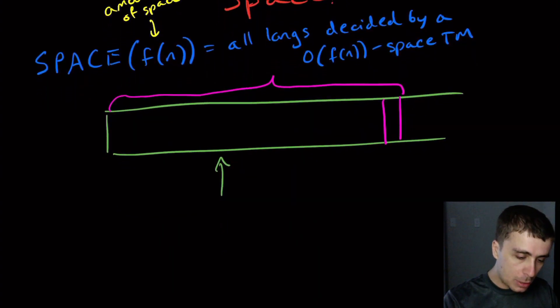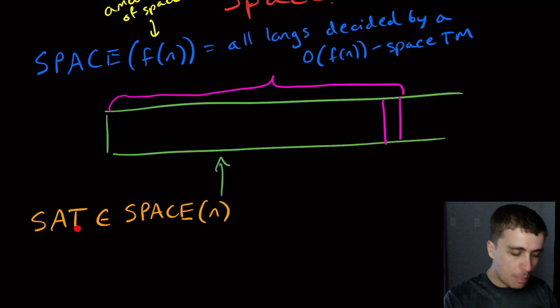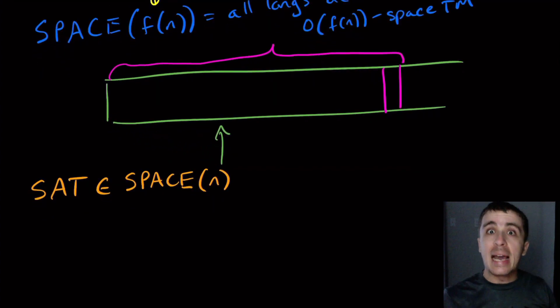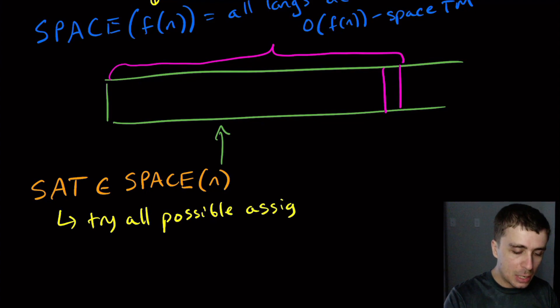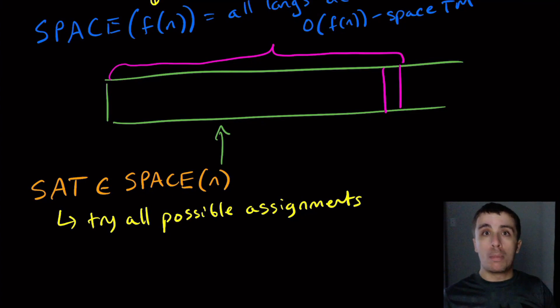So I want to show some examples. We've talked about SAT before. So I claim that SAT is in space of n. If you don't remember, SAT is the problem of you're given a Boolean formula and you want to check whether or not that formula is satisfiable or not. So what you can do here, the naive algorithm is just try all possible assignments to the variables. So try all possible assignments. Again we don't care about how long this takes, we just care about how much space is used.